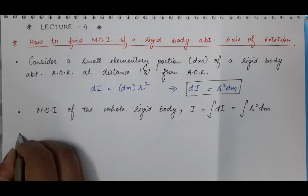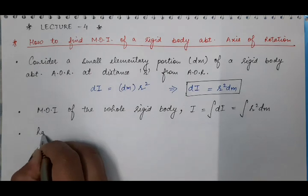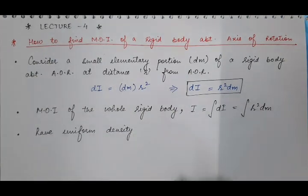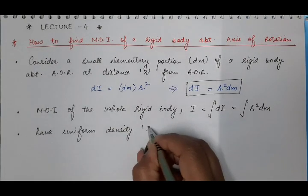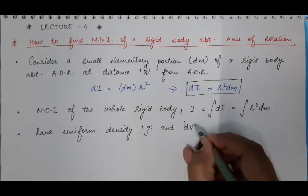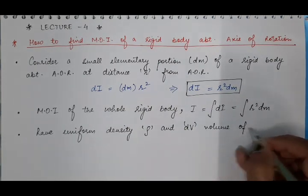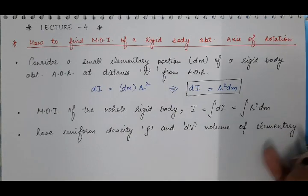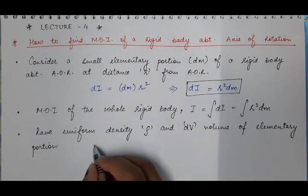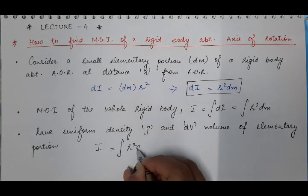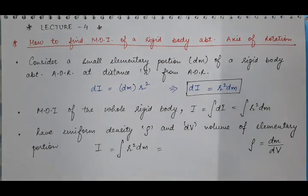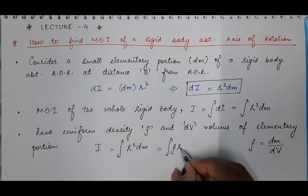First case: if the rigid body has uniform density ρ, and the volume of the elementary portion is dv, then since density is mass per unit volume, dm = ρ dv. So the moment of inertia becomes I = ∫ρ r² dv.